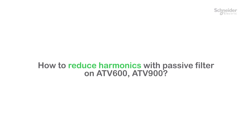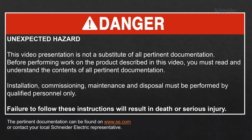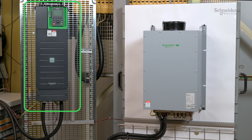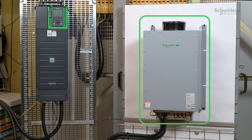How to reduce harmonics with passive filter and IFI function on ATV600 and ATV900. Hello. Today we will show you the benefits you can get using a passive filter. We will guide you to connect a passive filter to the drive and program the input filter IFI function. In this video, we will use an ATV630D30N4 with a 5% passive filter VW3A46127.